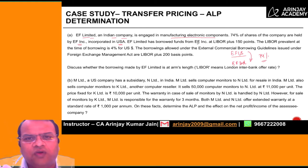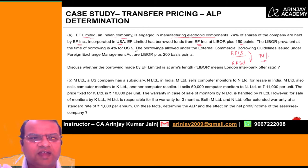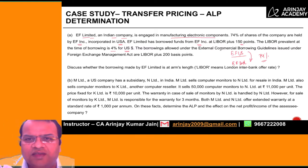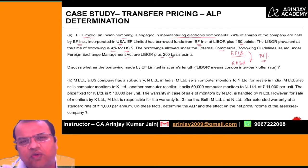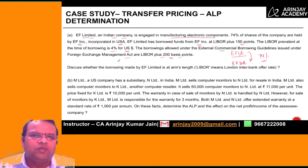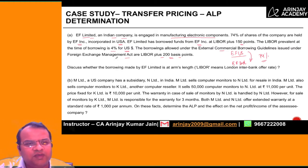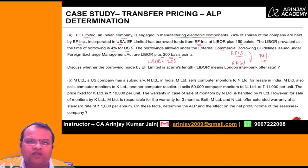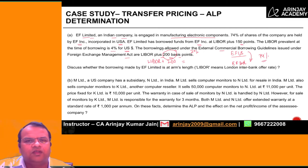EF Limited has borrowed funds from EF Inc. at LIBOR plus 150 basis points. The LIBOR prevalent at the time of borrowing is 4% per US dollar. The borrowing allowed under the External Commercial Borrowing Guidelines issued under the Foreign Exchange Management Act is LIBOR plus 200 basis points. 200 basis points basically means 2%. So since the rate of LIBOR is 4%, you are allowed to take a loan at 4 plus 2, equal to 6%.